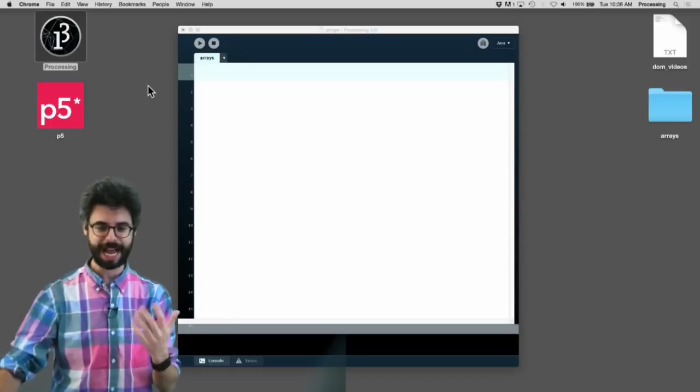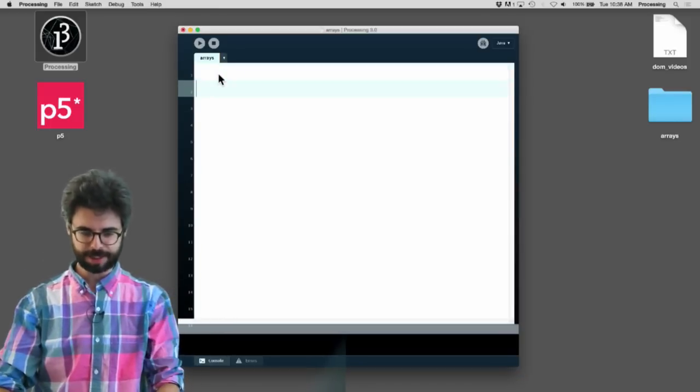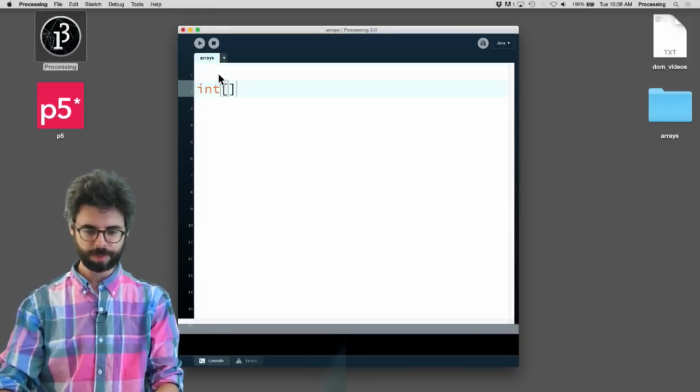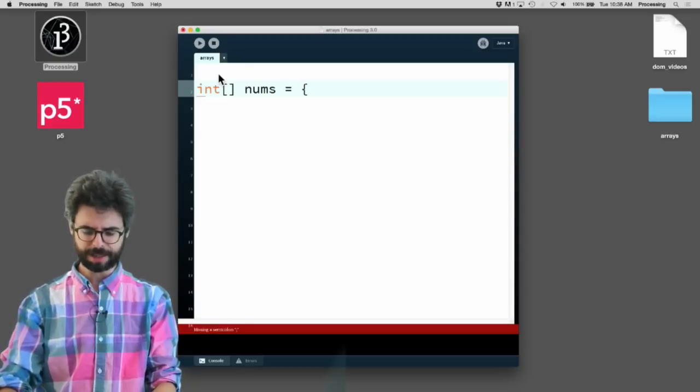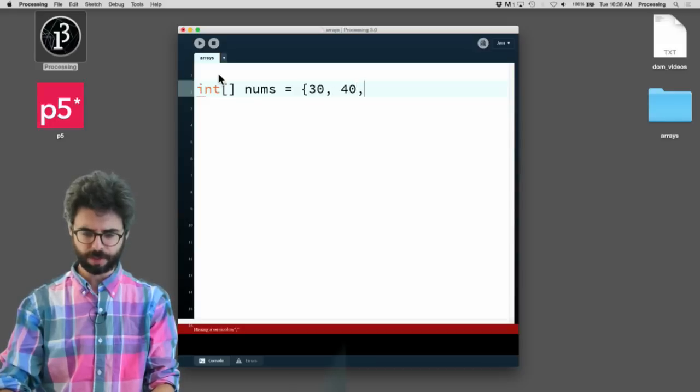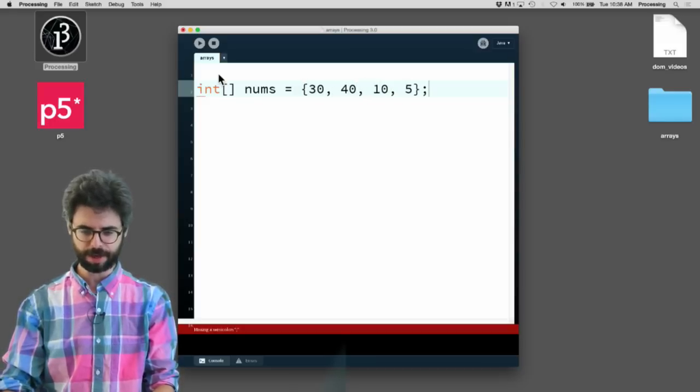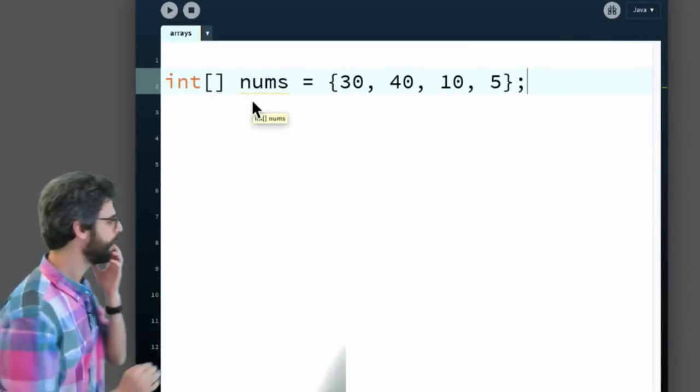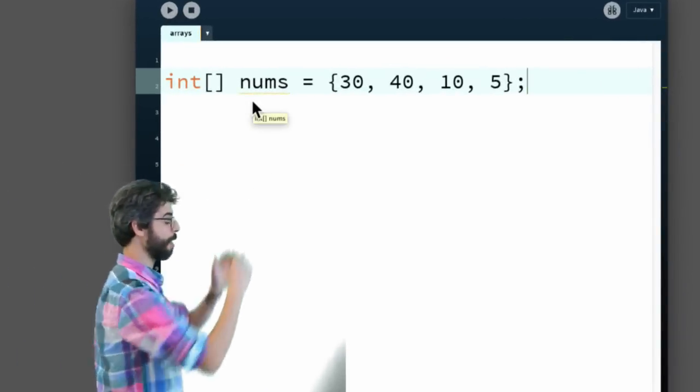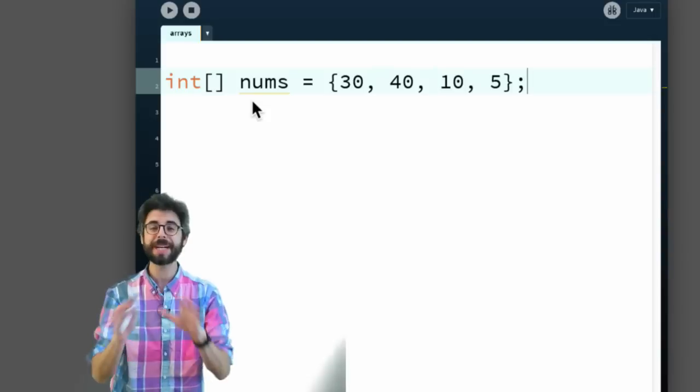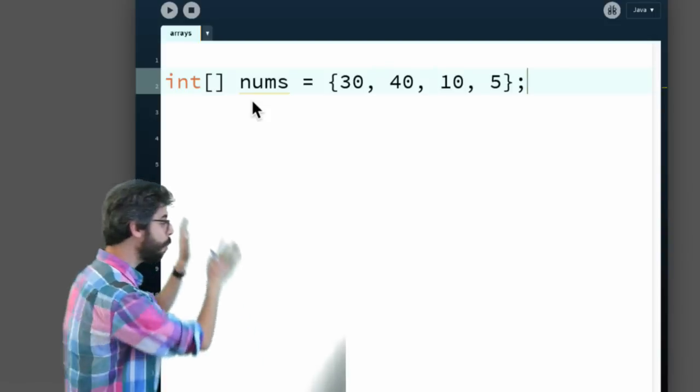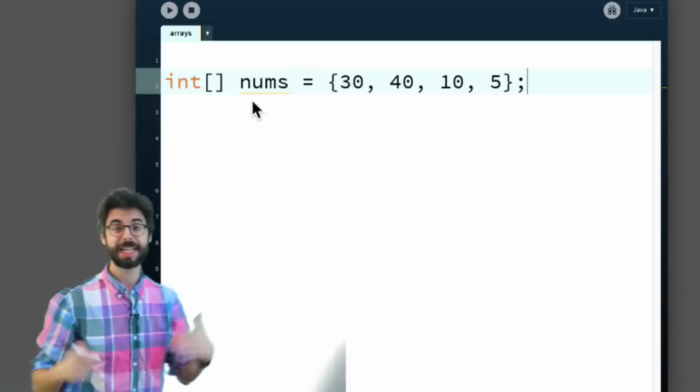I'm going to start a sketch and add this. I'm going to say at the top, int nums equals, and I'm going to make them like 30, 40, 10, 5, arbitrary numbers. That's the syntax for an array. There are other ways you can initialize an array. You can use a loop. I'm going to get to that in a bit. This is just one way to start off this list of values.